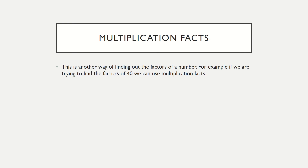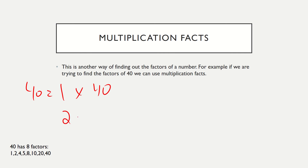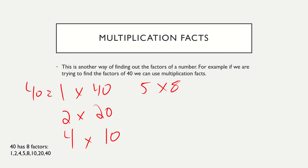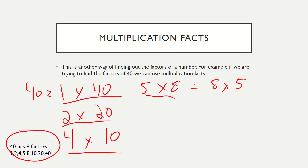The easiest way, in my opinion, is multiplication facts — this is another way of finding factors of a number. For example, if we were trying to find the factors of 40, we can use multiplication facts. What divides into 40? Well, one and 40 — one times 40. Two multiplies by something to get 40: two goes into 40 twenty times. Four goes into 40 ten times. Five goes into 40 eight times. So I use multiplication facts to show my factors, and eight times five is the same as five times eight. The number 40 has eight factors: one, two, four, five, eight, ten, twenty, and forty.